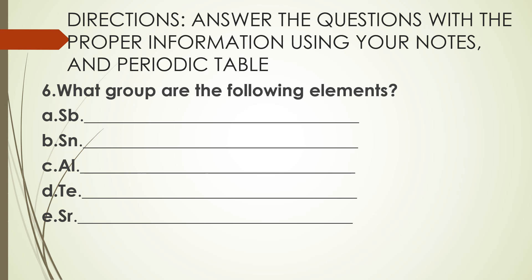Number six: what group are the following elements in? Earlier we looked for the period; now find the group. What group is Sb? What group is Sn? What group is Al? What group is Te? And what group is Sr? Find the group for each of these elements.